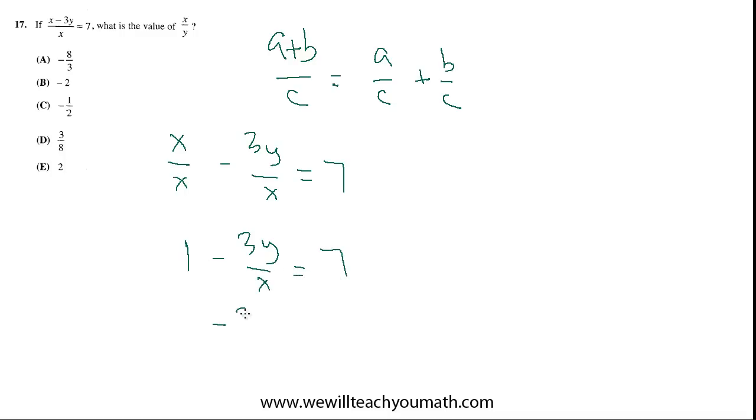Then we can subtract 1 on both sides. So minus 3y over x equals 6. And now we can divide by negative 3 on both sides. So we get y over x equals 6 over negative 3, which is negative 2.